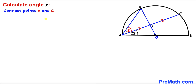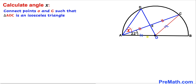Let's get started. Here's our very first step: let's connect the center O with point C. Now we can see OA and OC — they are the radii of this semicircle, so therefore they are equal in length. Therefore triangle AOC is an isosceles triangle, with this side length equal to this side length.